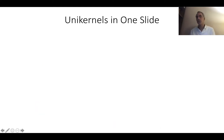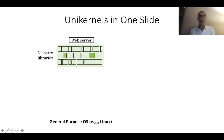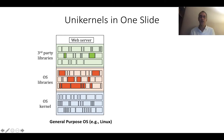Let me show you what a unikernel actually is in one slide. Imagine all you want to do is run a web server. Normally you take a general-purpose OS and distribution such as Linux and Ubuntu. On it, you're going to have third-party libraries, and you're only going to need a few of those to run the web server, but you get all of them. There are OS libraries — same deal. Not everything is needed by the web server. And out of the kernel, you don't need all the functionality of the kernel, but you get all of it anyways.